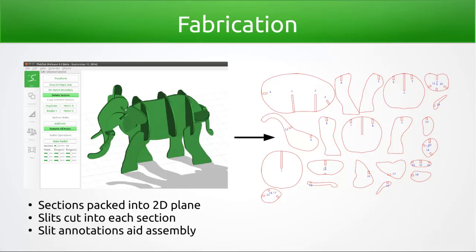Our system packs the 2D contours for each planar section into a single rectangle which serves as input to a printer or device which cuts planar materials. Our system also automatically computes the slits to be cut into connected sections. Finally, our system can numerically label pairs of connected slits, which can be either printed or etched onto each fabricated section.